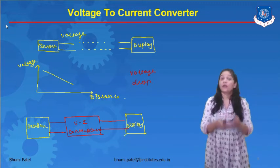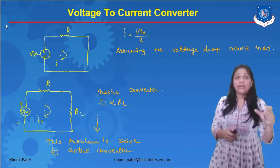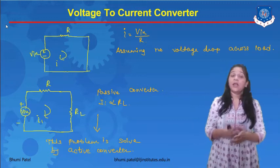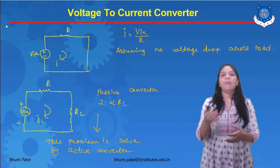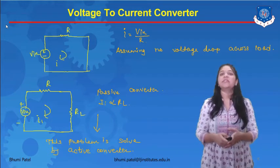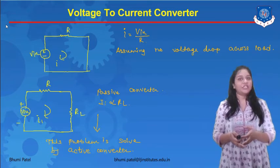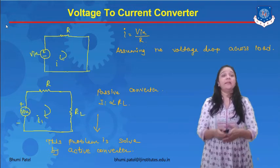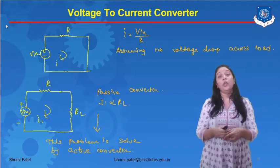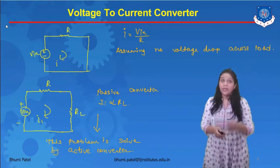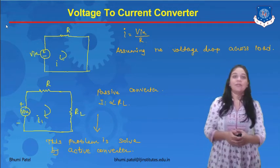How do we convert voltage to current? This is the diagram of the voltage to current converter. A voltage input is given to a simple resistor, and the current flowing through the resistor is I. Using Ohm's law, I equals V over R, so the equation becomes I equals V-in over R. We can assume there is no voltage drop across the load. In the next diagram, a load resistance RL is also connected, and the current flowing through RL is directly proportional to load resistance for the passive converter.